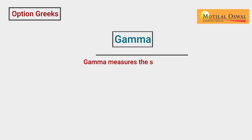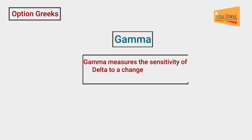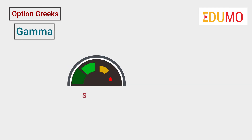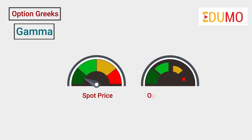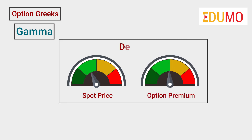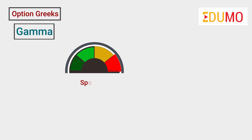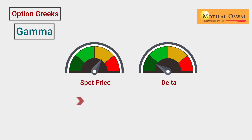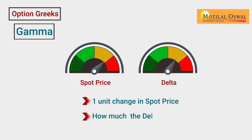Next is Gamma. The Gamma measures the sensitivity of delta to a change in the value of the underlying asset. In simple terms, if the spot price changes, then the options premium changes, which is measured by delta. But as spot price changes, the delta also changes. So with one-unit change in the spot price, how much the delta will change is measured by the Gamma, assuming other things remain constant.